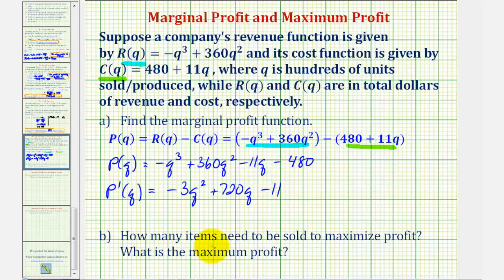For part b, how many items need to be sold to maximize the profit, and what is the maximum profit? To maximize the profit, we begin by determining the critical numbers, which is where the first derivative, or the marginal profit function, is equal to zero or undefined.